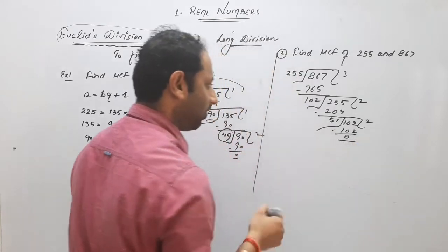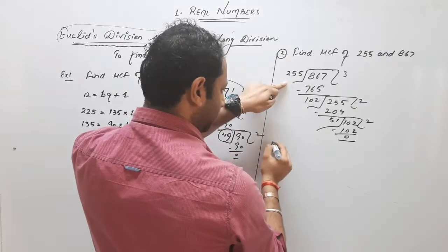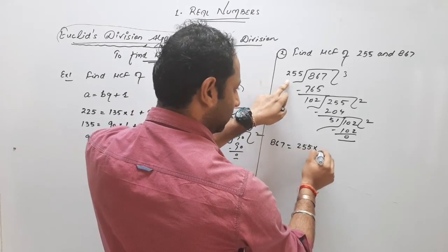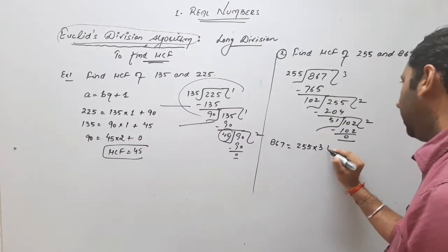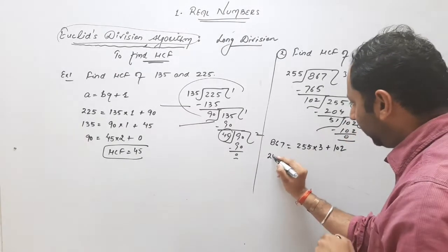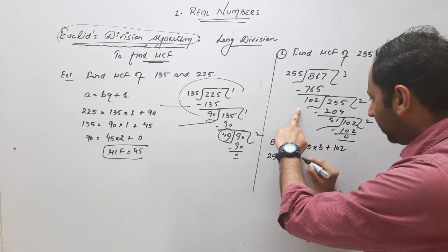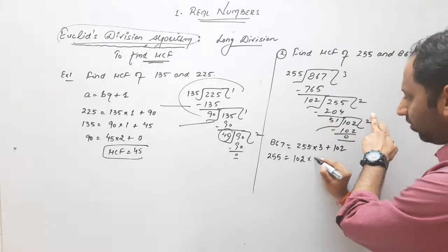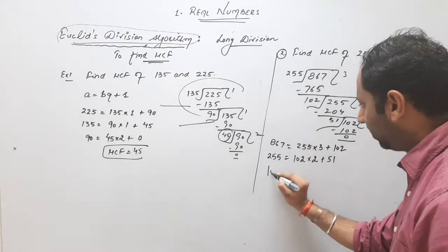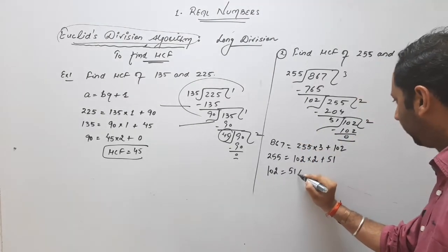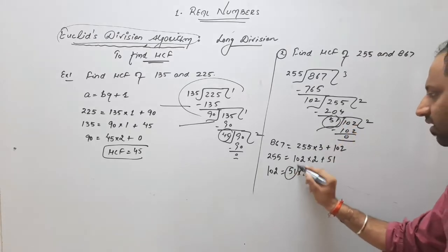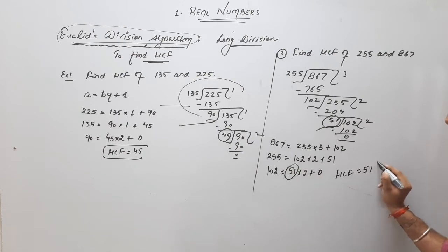This is there. Now, in very first, dividend this, divisor this, quotient 3, remainder 102. Second, dividend 255, divisor 102, quotient 2, remainder 51. In this, dividend, dividend 2. And we know HCF is 51.